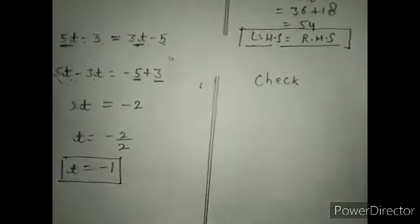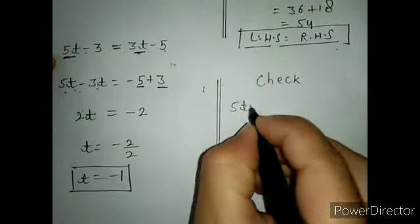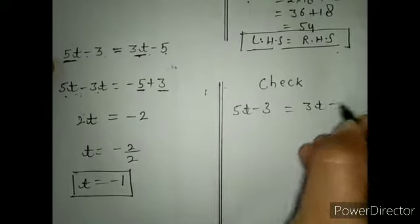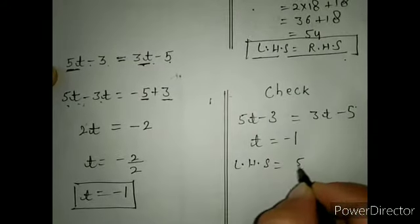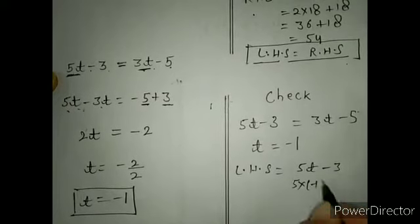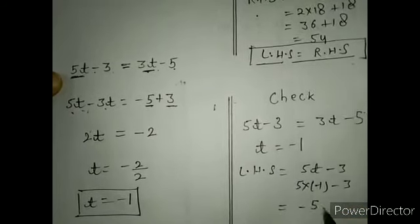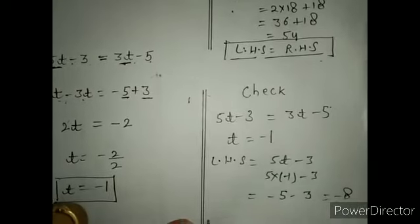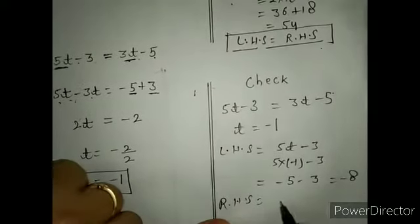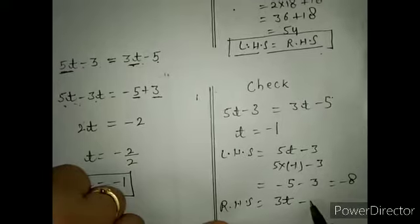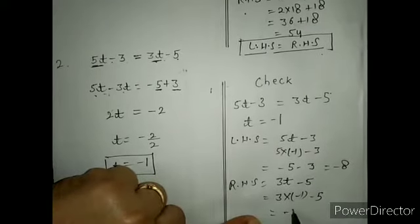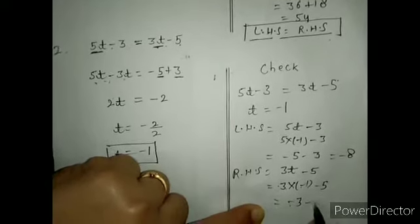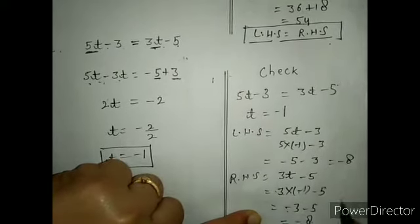Now you have to check whether it is right or wrong. Same process. Given: 5t minus 3 equals 3t minus 5. Left hand side: 5 times minus 1 minus 3 equals minus 5 minus 3 equals minus 8. Right hand side: 3 times minus 1 minus 5 equals minus 3 minus 5 equals minus 8. So both sides equal minus 8 — verified. Your checking is done and value is found.